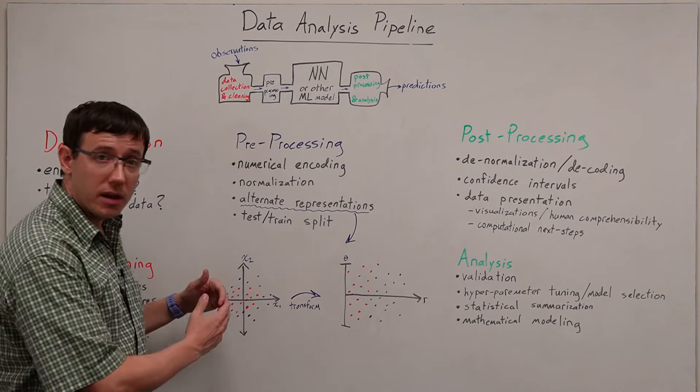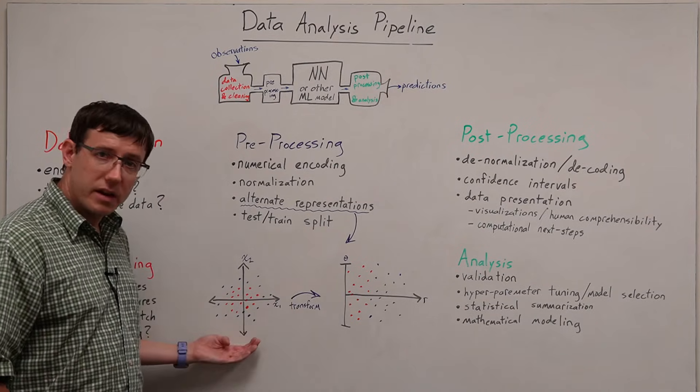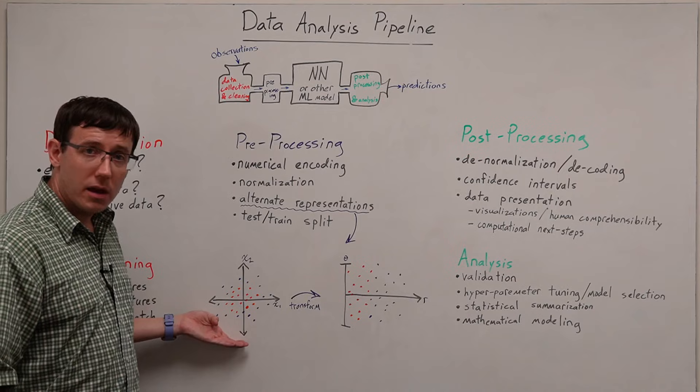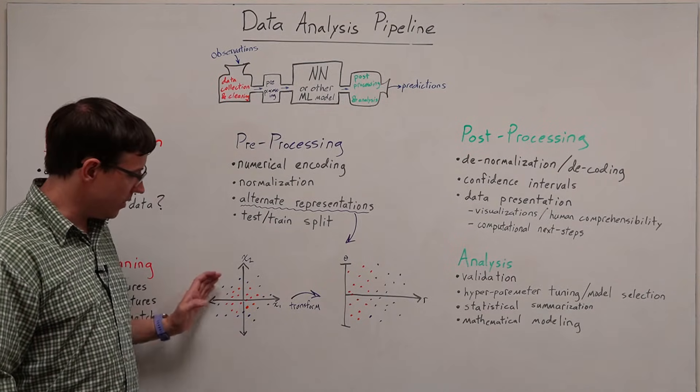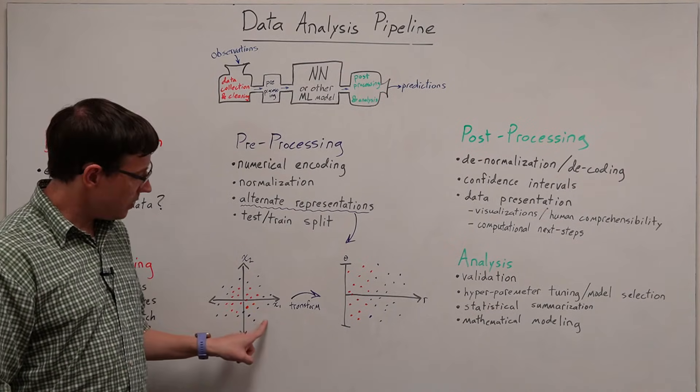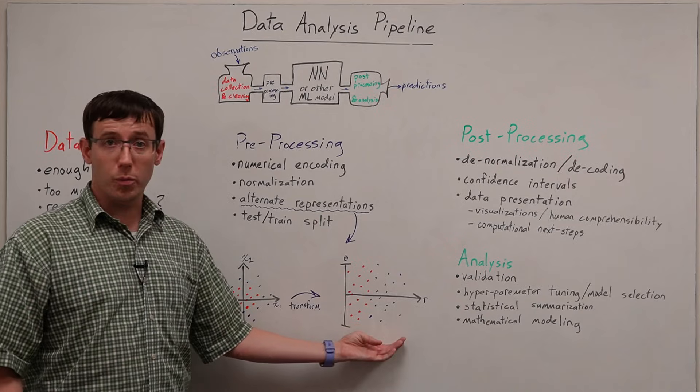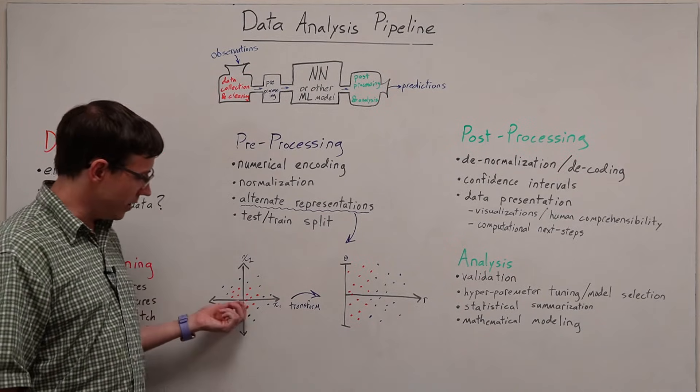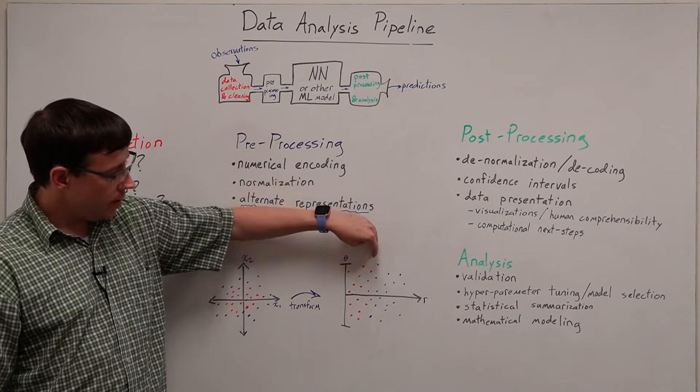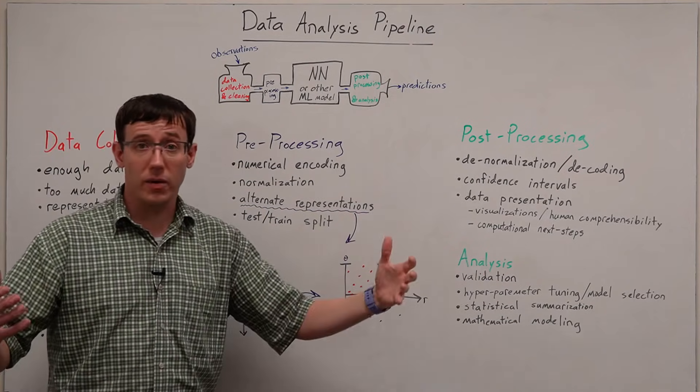And if we have here data in terms of dimensions x1 and x2, there's no easy way to draw a line that separates most of the blue points from most of the red ones. But if instead of representing our data in Cartesian coordinates, we transformed it into polar coordinates, where each data point is represented by a radius from the origin and an angle, now there is a very clear linear decision boundary that easily separates our two classes.